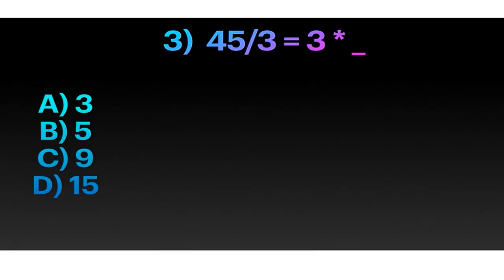The next question is, 45 divided by 3 equals 3 times blank. For this one, what we can do, there's a few ways we can do it. The first way, we can just guess and check and multiply the numbers by 3, or we can divide 45 by 3.